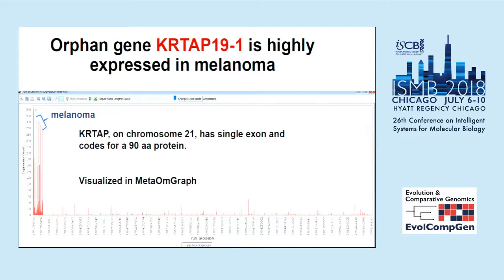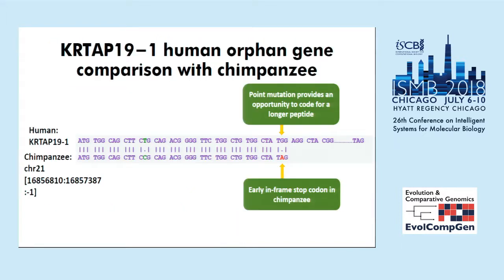Another example is KRTAP119, a monoexonic gene on chromosome 21, which is already annotated in Ensembl. I found it is highly expressed in melanoma and almost not expressed in other samples, suggesting it may have a function related to that condition. I then took the genomic sequence and used BLASTN to find the region of similarity on chimpanzee chromosome 21. In chimpanzee there is an in-frame stop codon creating a smaller open reading frame, but in humans this stop codon has been mutated — though I need to do a more detailed follow-up analysis.